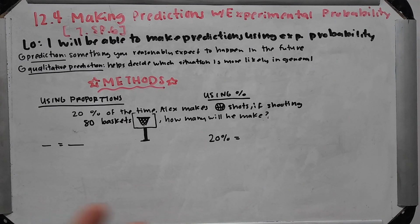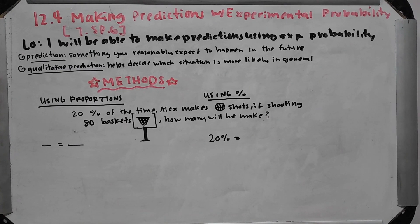A prediction is something that you originally expect to happen in the future. When you have a prediction, you make an educated guess of what's gonna happen in the future. Then qualitative prediction helps you decide which situation is more likely in general. Qualitative has to do with quality, so which one do you think is going to happen most? Which one's gonna be most likely to happen?